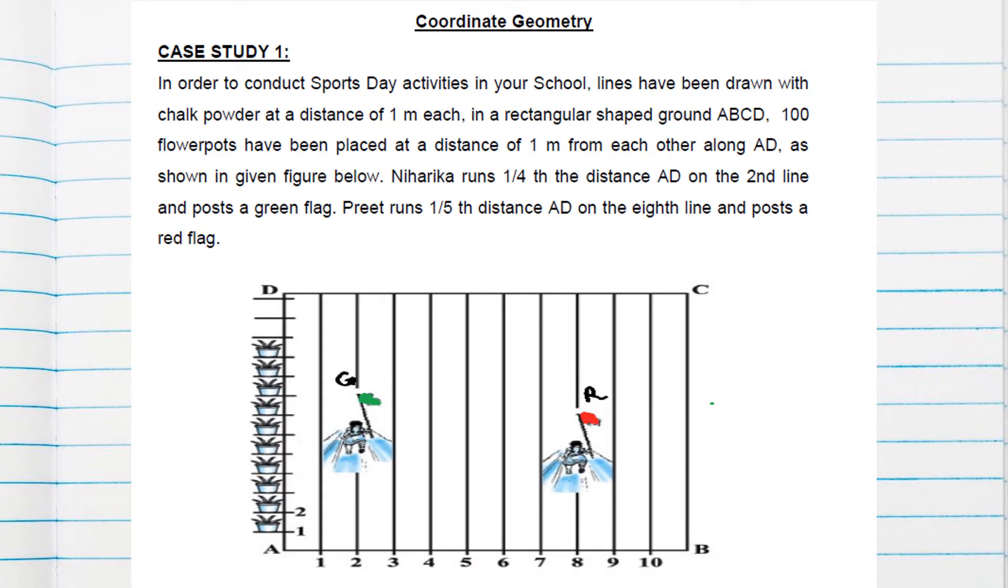This is a case study based on coordinate geometry. In order to conduct sports activities in your school, lines have been drawn with chalk powder at a distance of one meter each in a rectangular shaped ground ABCD. One unit distance is given, and hundred flower pots have been placed at a distance of one meter. This means the length AD will be hundred.